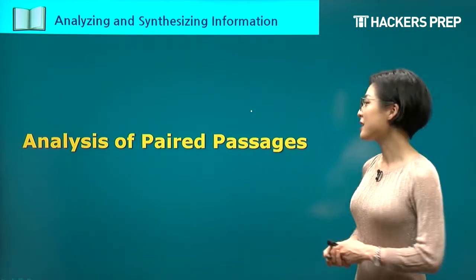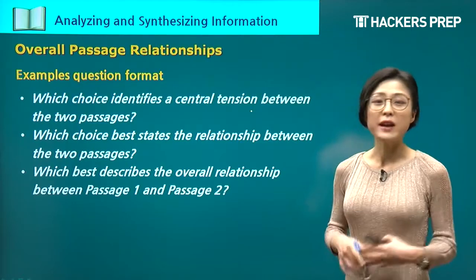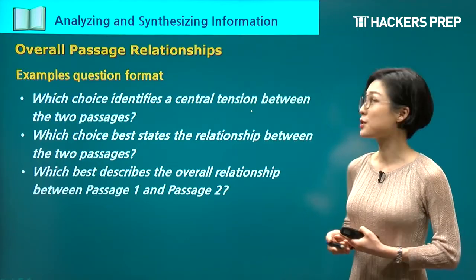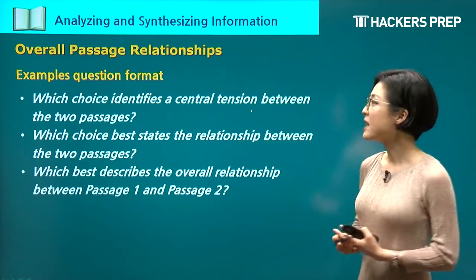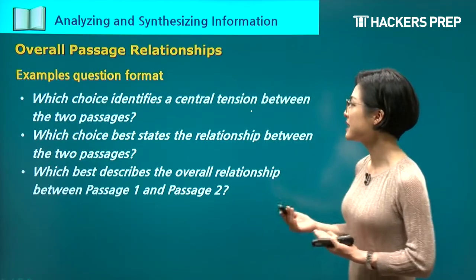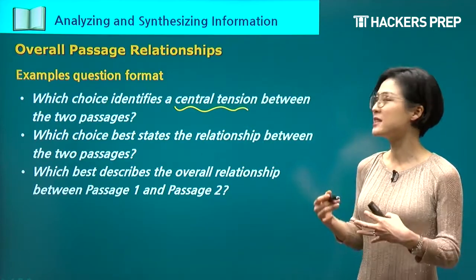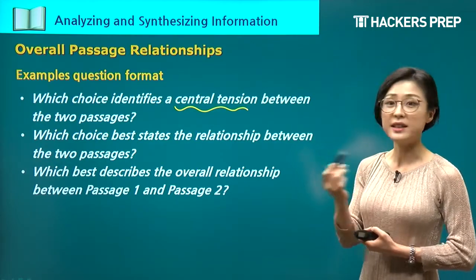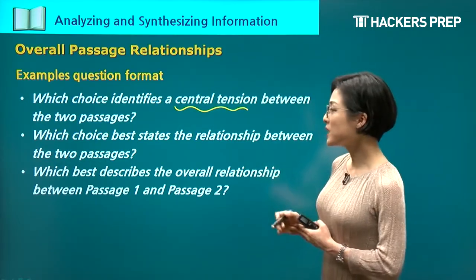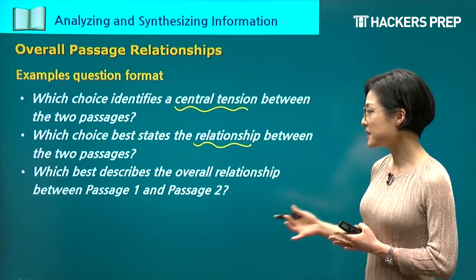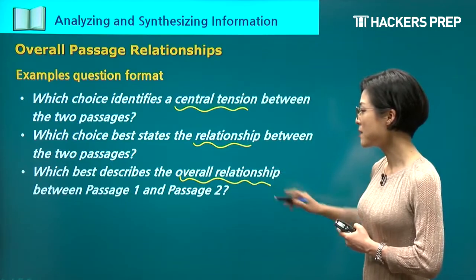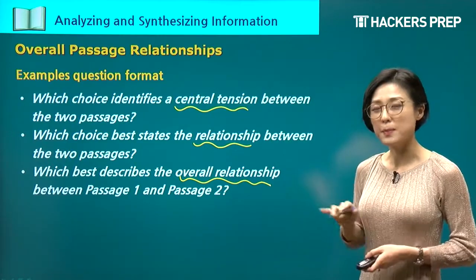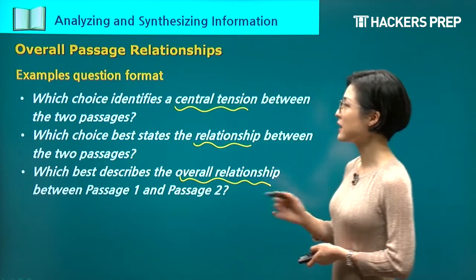Let's begin with the analysis of paired passages. There are a range of questions that could come up here. The first type asks you to discuss the overall passage relationships. For example: 'Which choice identifies a central tension between the two passages?' or 'Which choice best states the relationship between the two passages?' or 'Which best describes the overall relationship between passage one and passage two?' We want to gain the big picture of the two passages and discuss the relationship between them.